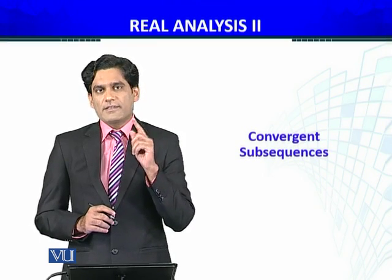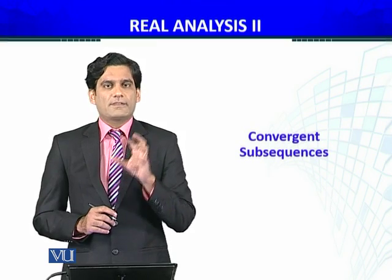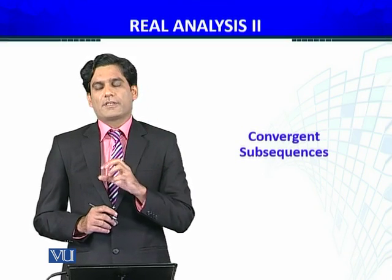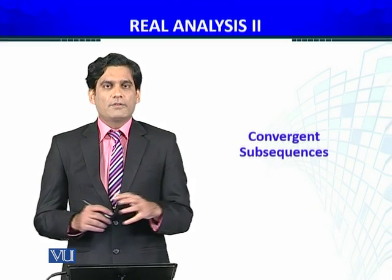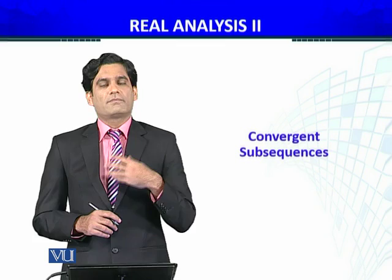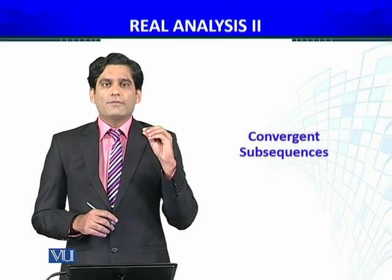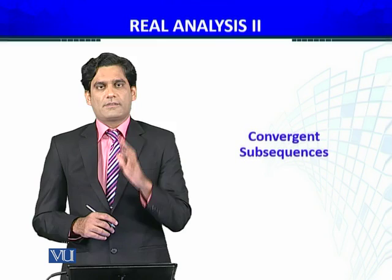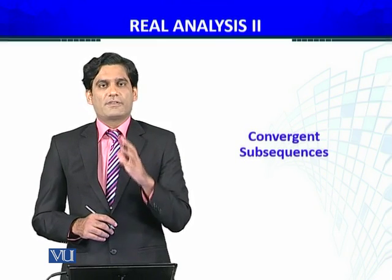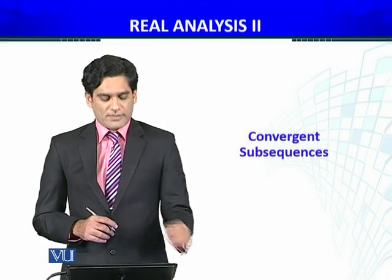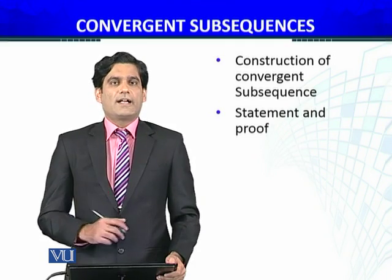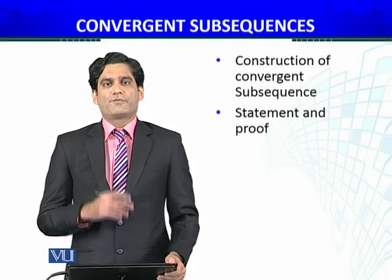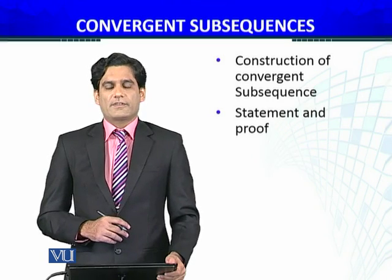In the last module we discussed examples. If the set is countable, then we have a sequence of functions that is pointwise bounded and we have a convergent subsequence. But if it is uncountable and compact, and the sequence of functions is uniformly bounded, then we have counterexamples that there may not be a convergent subsequence. We discussed those counterexamples. So how to construct a convergent subsequence and under what conditions we can construct that subsequence which is convergent for a sequence of functions, we will discuss, state, and prove.